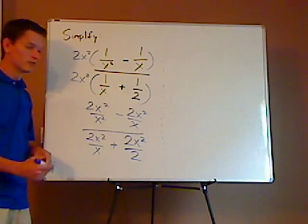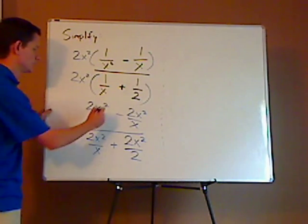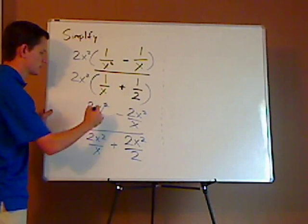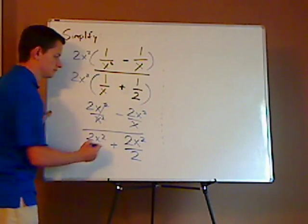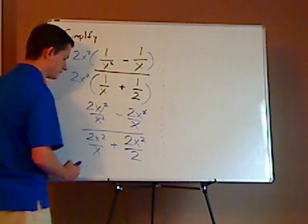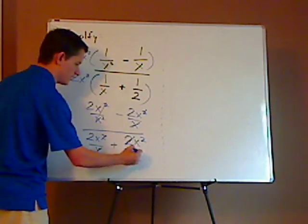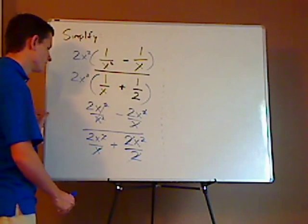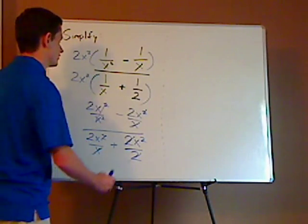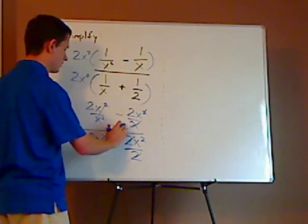Now notice a lot of things are going to cancel out. Those x squared are going to cancel out. And x is going to cancel out there. X is going to cancel out there. The 2's cancel out there.